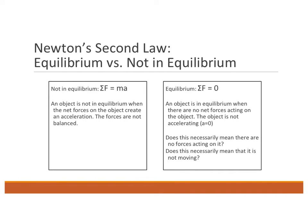We're going to start to look at forces in a more complicated manner — multiple forces acting on an object. In order to successfully solve force, acceleration, and motion problems, we need to determine what we call the net force. The net force is basically the difference between two opposing forces. If the net force is zero, that means it is a balanced or equilibrium situation.